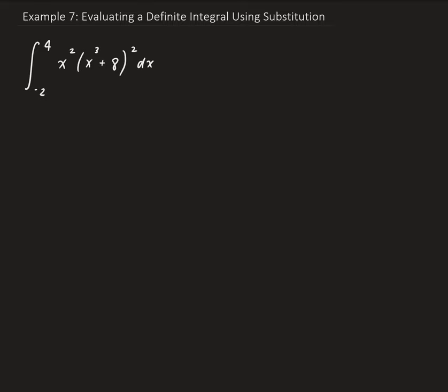We're going to use the substitution method here. We're going to let u be equal to x cubed plus 8. This is an ideal choice because it's inside these parentheses raised to the second power. And when we take the derivative of that, we're going to get a form of x squared. So du/dx is equal to 3x squared.